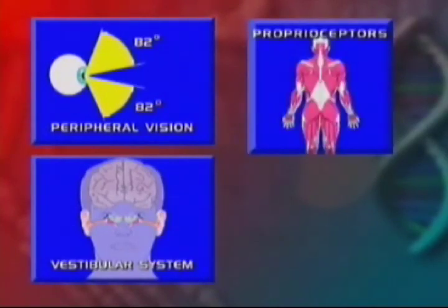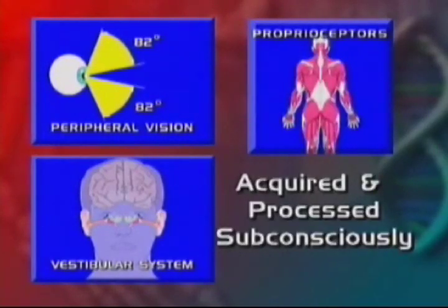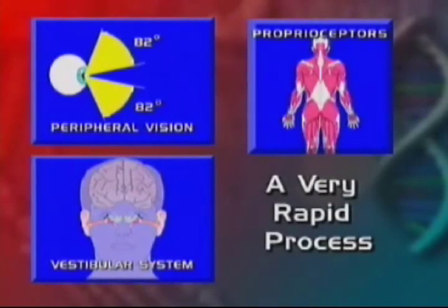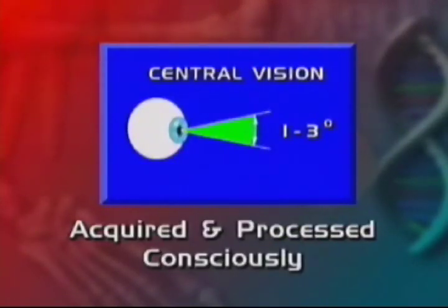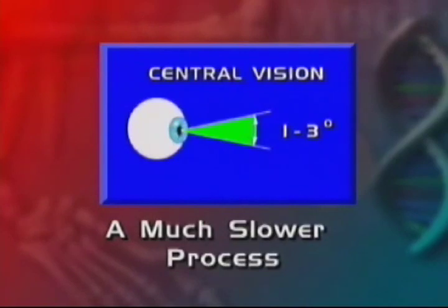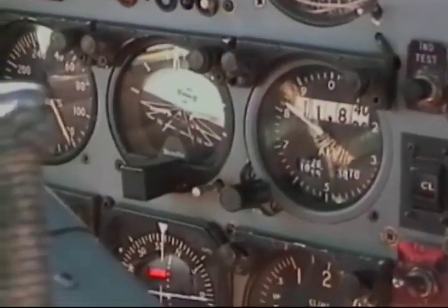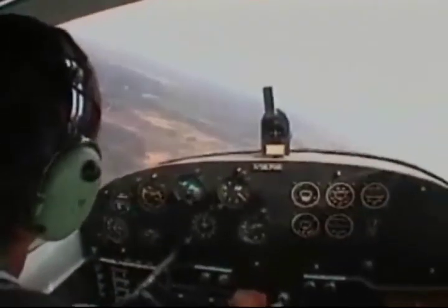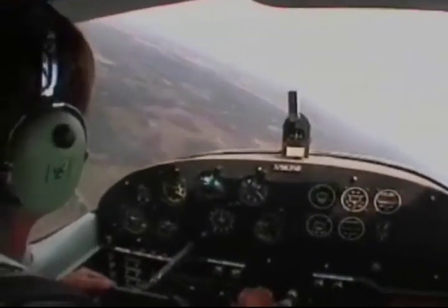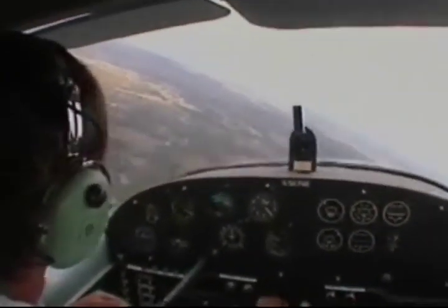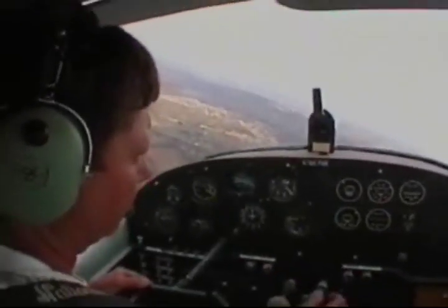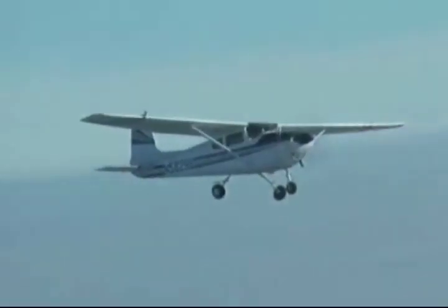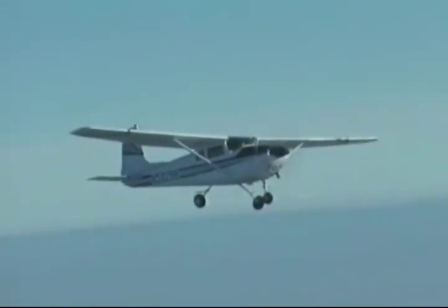Information from peripheral vision, vestibular signals, and proprioceptors are acquired and processed subconsciously. This process is very rapid. Information from central vision is acquired and processed through a conscious process — this process is much slower. This is a factor in your instrument cross-check for feedback on your status in flight. If you are an experienced and current instrument pilot, you will use your central vision to concentrate on the flight instruments, override false illusions, and maintain aircraft control. This skill takes practice, discipline, and concentration.